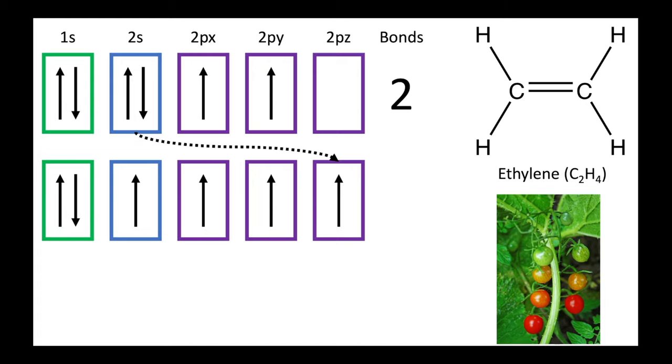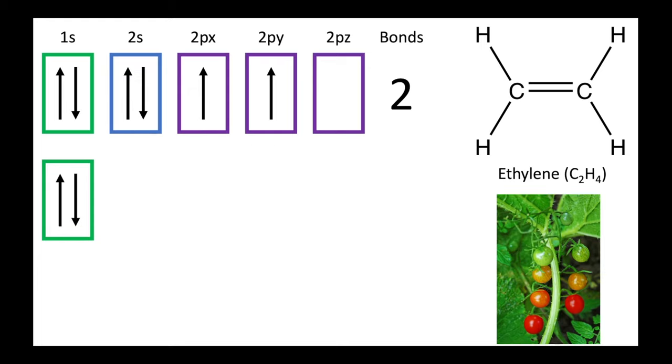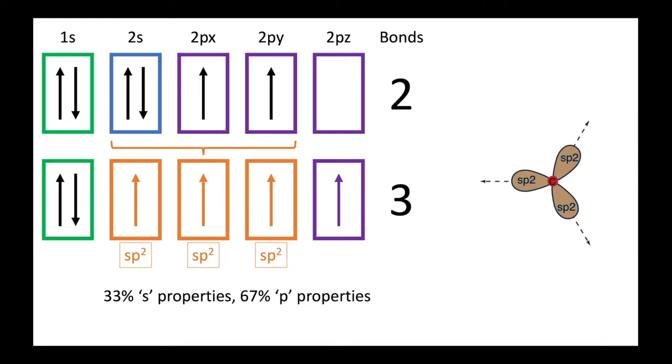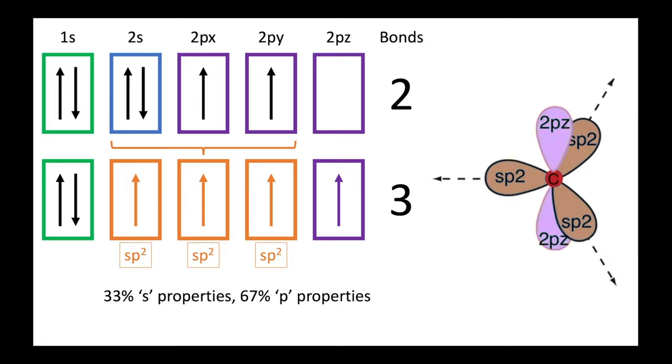Once again, one electron is promoted to the 2pz orbital, but only three hybrid orbitals are created, known as sp2 orbitals. Each of these sp2 orbitals takes on 33% of the s orbital properties and 67% of the p orbital properties. As before, these sp2 orbitals arrange themselves to create the maximum amount of distance between themselves, this time taking on a flat or planar triangular configuration with a 120 degree angle between the orbitals. There is of course the unpaired electron in the 2pz orbital, and this aligns itself perpendicular to the plane of the three hybrid orbitals.